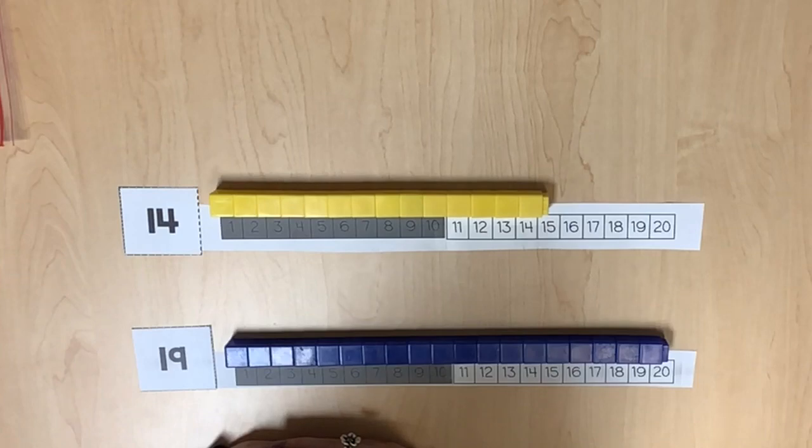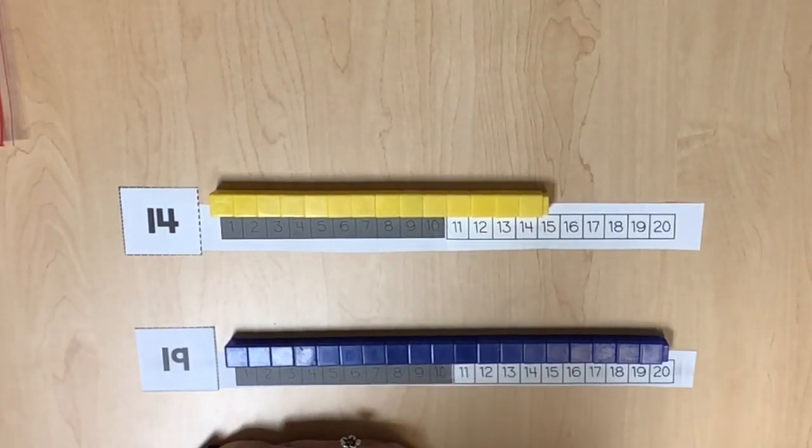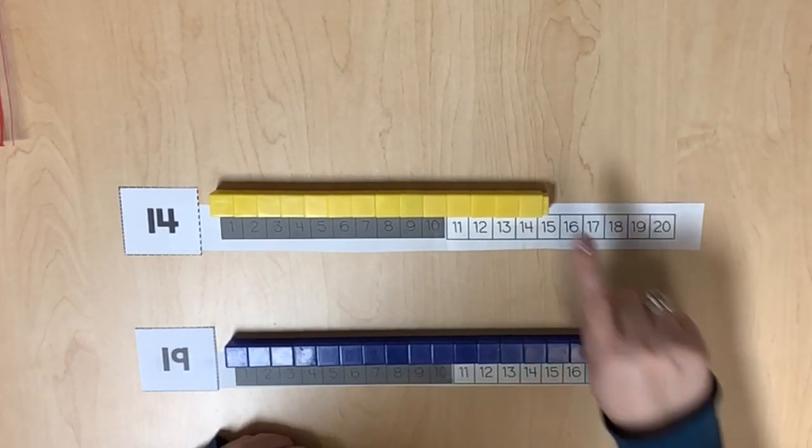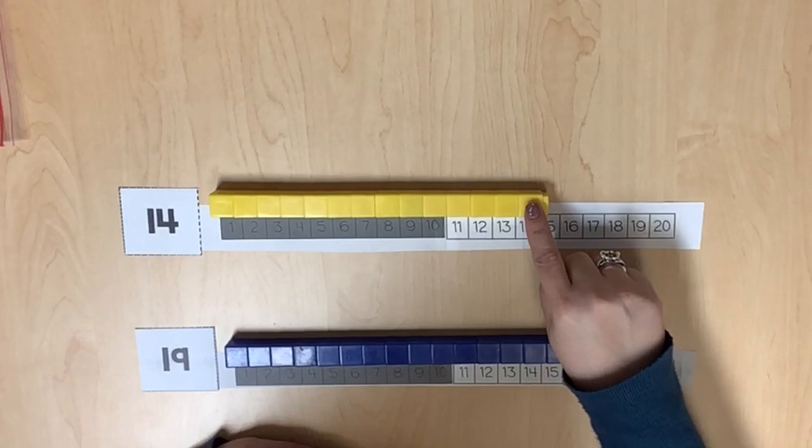Label each number path with a number card showing the two quantities that are being compared. We can use the number paths and linking cubes to see that 19 is more than 10 or greater than 14. 14 is less than 19.